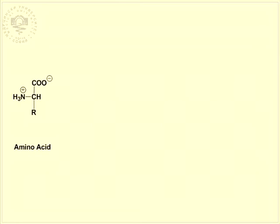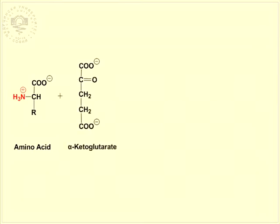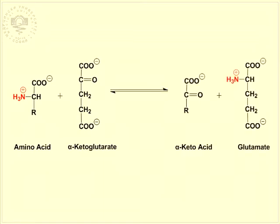Most amino acids are degraded by transdeamination, a process where a transamination reaction is linked to the oxidative deamination of glutamate. In transamination, an amino group of an amino acid is transferred to an alpha-keto acid. This results in the creation of a new alpha-keto acid and a new amino acid.